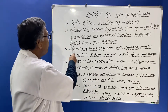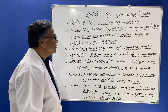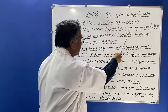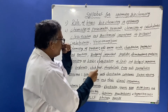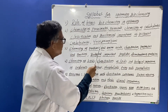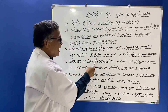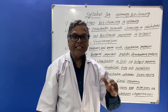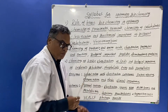The first chapter is the role of basic biochemistry in optometry. The second chapter is chemistry of proximates and chemistry of carbohydrates, including their classification. We should know the biochemical importance of different carbohydrates and glycosaminoglycans, which come under the classification of carbohydrates.